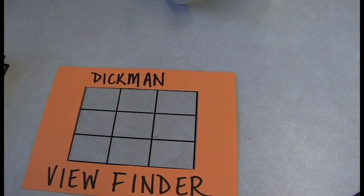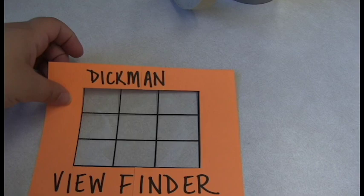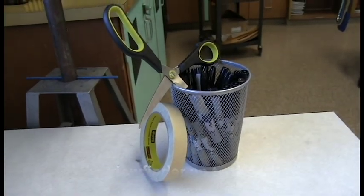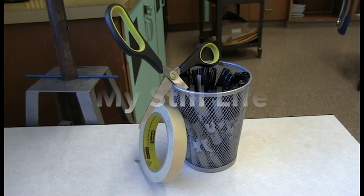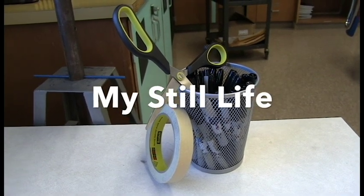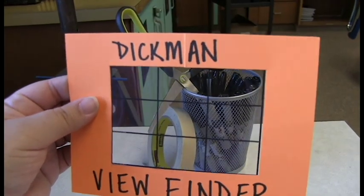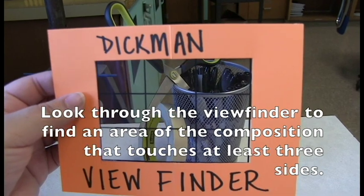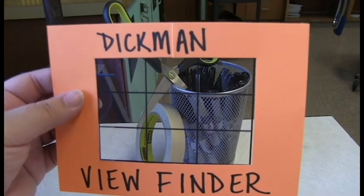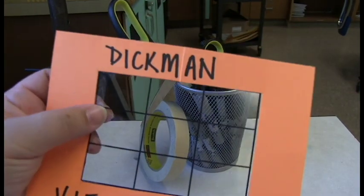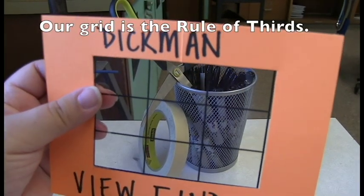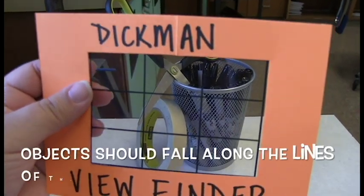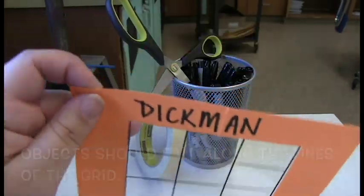Using a viewfinder is quite simple. All you need to do is hold it up to your still life. My still life happens to be a cup of pens, a pair of scissors, and a roll of tape. All you need to do is look through your viewfinder to find an area of the composition that touches at least three sides. We have the rule of thirds as our grid. To make your composition more interesting, you want to make sure objects fall along the lines on the grid. Because this is a vertical composition, it might be easier to start out vertically.